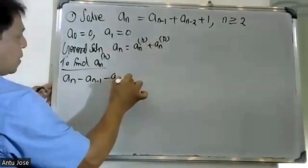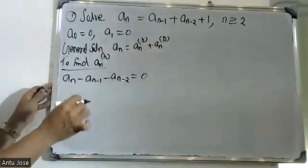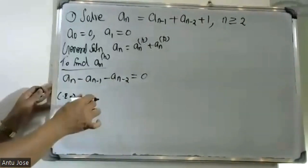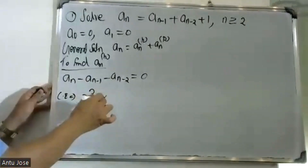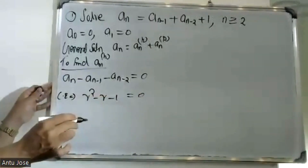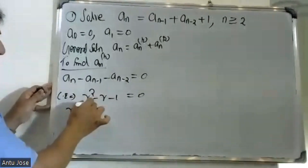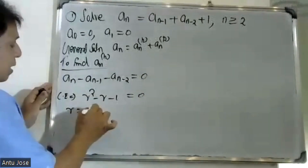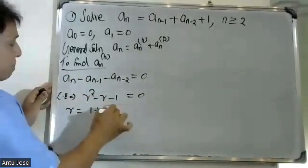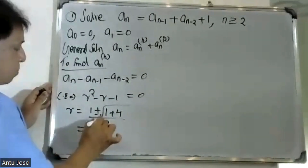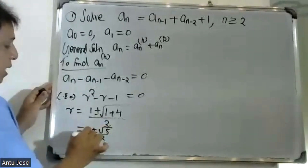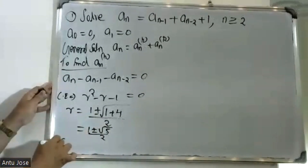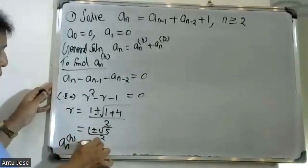The homogeneous part is a(n) minus a(n-1) minus a(n-2) equals 0. The characteristic equation is r squared minus r minus 1 equals 0. Using the quadratic formula, r equals 1 plus or minus root of b squared minus 4ac, divided by 2, which gives 1 plus or minus root 5, divided by 2. The roots are real and distinct.